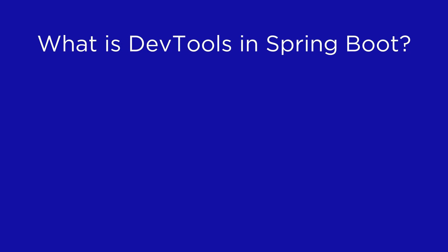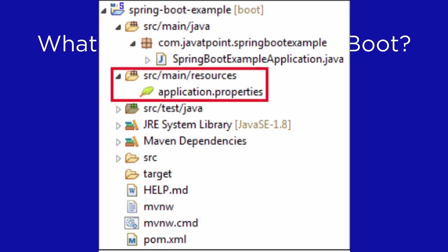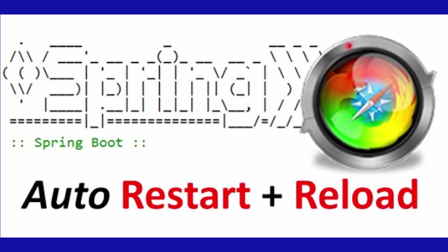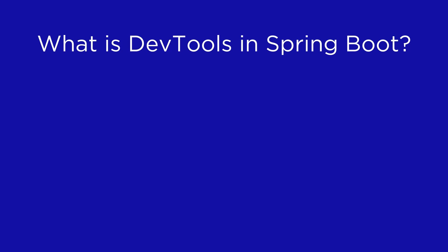But if you want to disable it, you can do that in the application.properties file by changing the relevant properties. DevTools module includes an embedded live reload server that is used to trigger a browser refresh when a resource is changed. For this purpose, we need to install a live reload extension in the browser. The feature of DevTools is to make the developer's experience much better and reduce development time by automating a lot of activities.